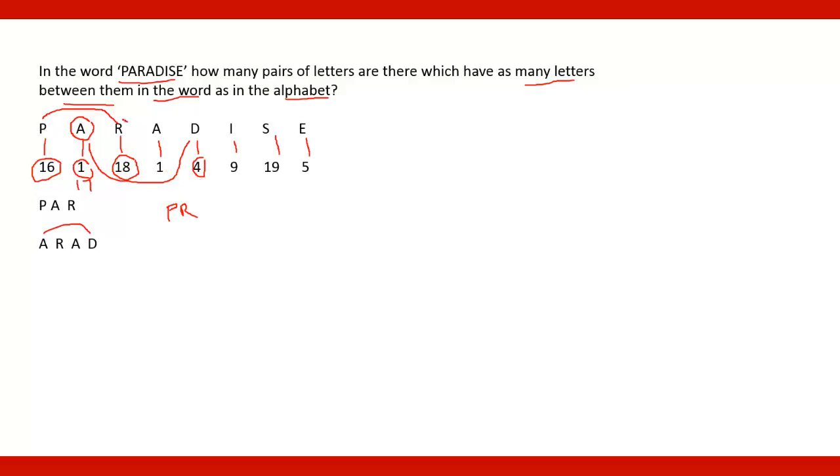So there are two numbers and there are two alphabets also, R and A. So in the word between A and D, R and A are the alphabets. Similarly in English alphabets also there are two letters. So another pair is A and D.